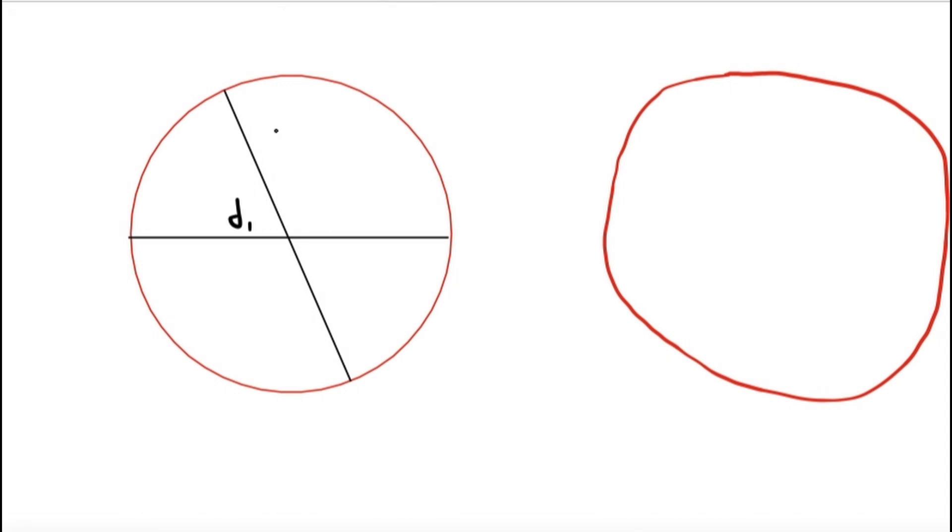But in science we don't measure things just once. We like to measure them multiple times to see if our results are reproducible. So what you want to do then is reorient your ruler so that you get just a different look at the diameter of the thing. And then we could call this measurement perhaps D2.